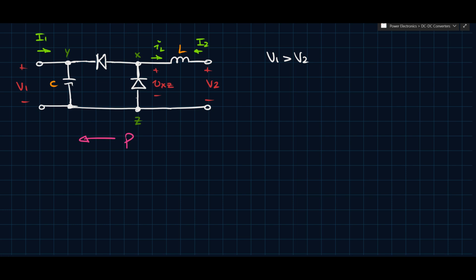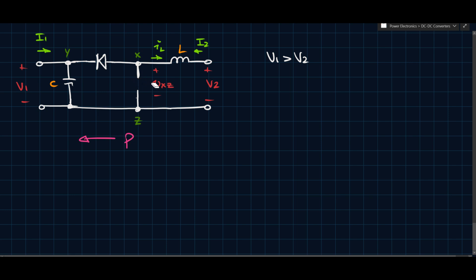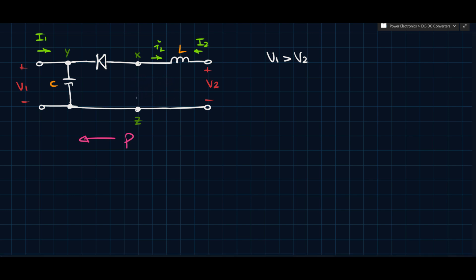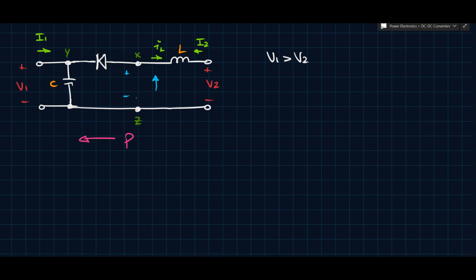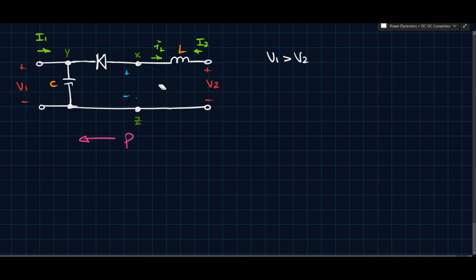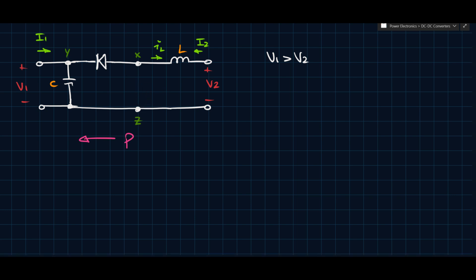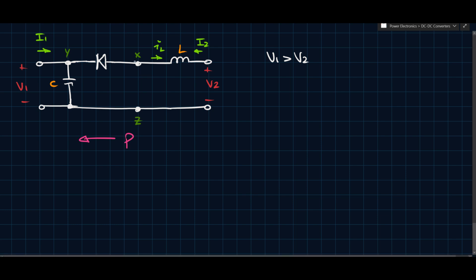Applying the same reasoning to the other switch: initially the current was going up, but now we have to reverse it and go down. If we reverse the terminal conditions, we have to reverse the switch conditions as well. So we place a transistor here. Now power can flow towards the left, whereas in the other case it was flowing towards the right. Assuming V1 is greater than V2, we go from a lower voltage V2 towards a higher voltage V1 — and we call this the boost converter.